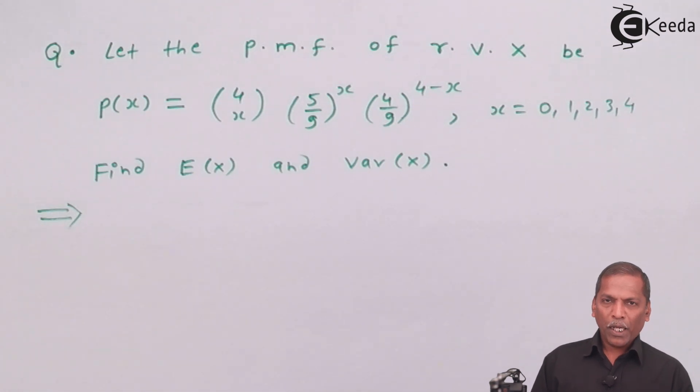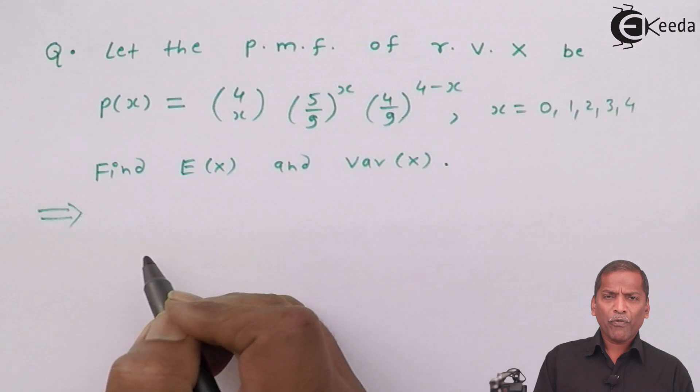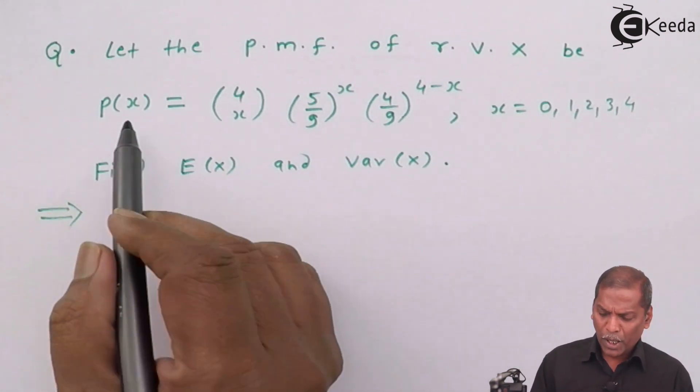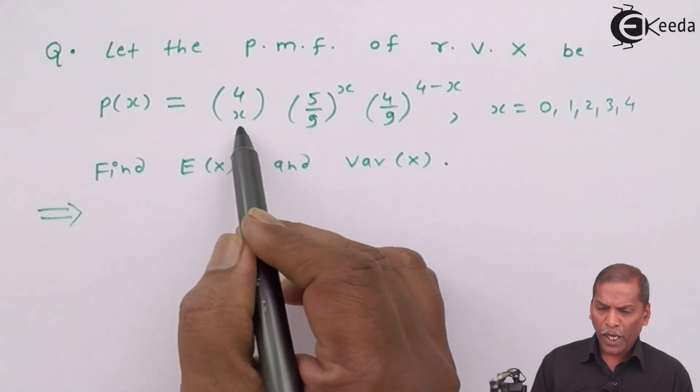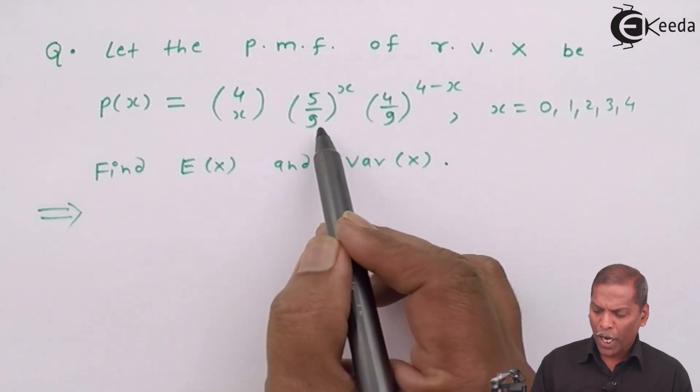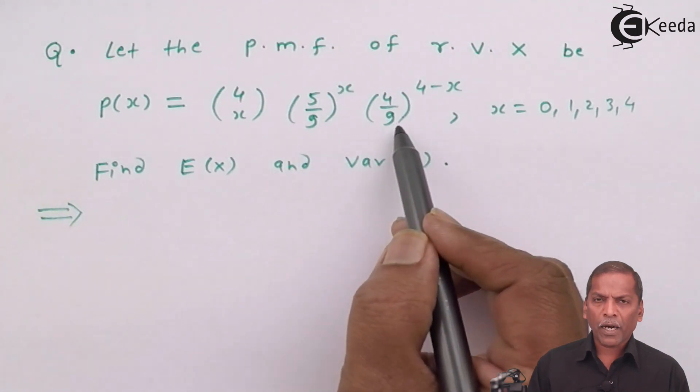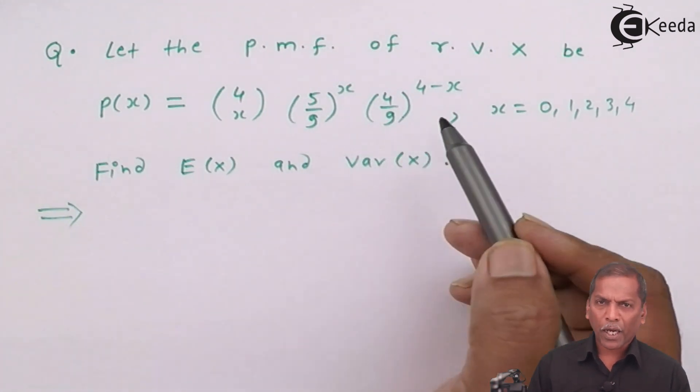Now, let's see the solution. First of all, we start with probability of X is equal to 4CX into (5/9) raise X into (4/9) raise (4 minus X).